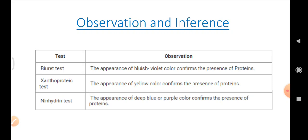In the xanthoprotic test, if the appearance of yellow color confirms the presence of proteins, so the inference is the presence of proteins. And in ninhydrin test, the appearance of deep blue or purple color confirms the presence of protein. So, if deep blue or the purple colors comes, then it can inference the presence of proteins.